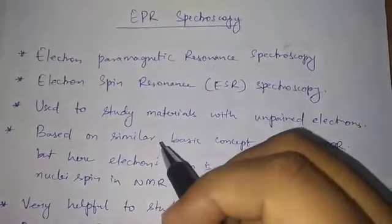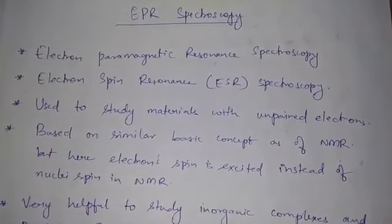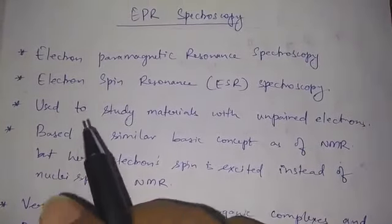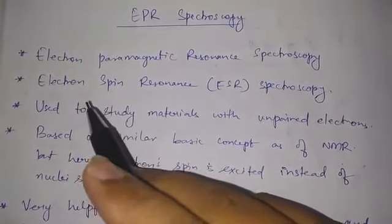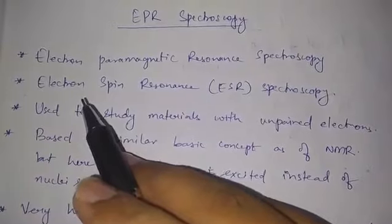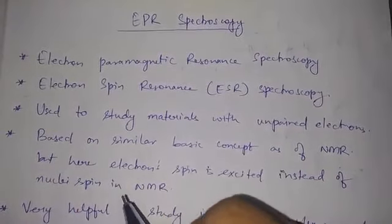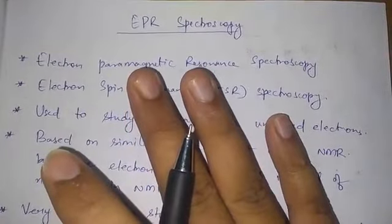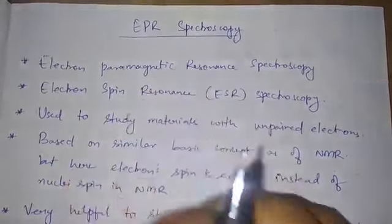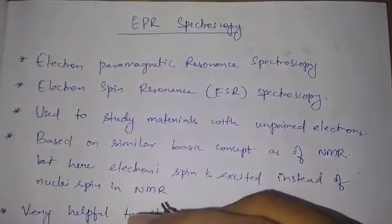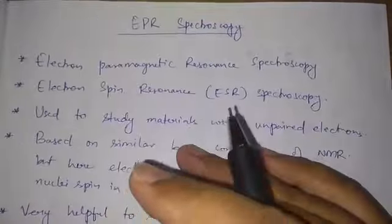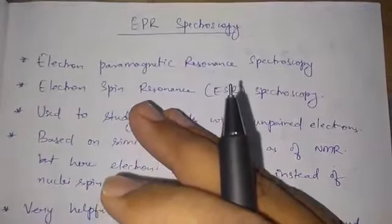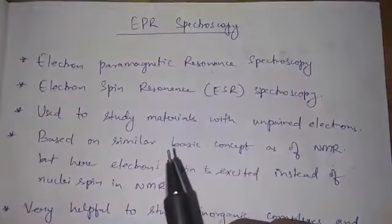EPR stands for Electron Paramagnetic Resonance spectroscopy, also called ESR — Electron Spin Resonance spectroscopy. This comes under inorganic spectroscopy. Two major topics can be asked from here: one is finding out the number of hyperfine lines, and the other is about the G-factor — specifically G parallel and G perpendicular.